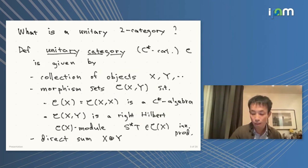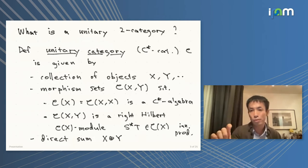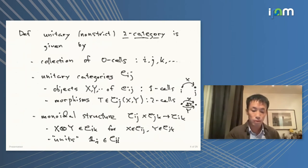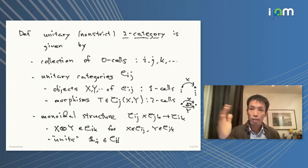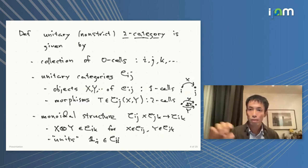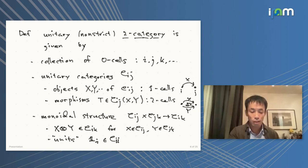For example, if you have projections in the C*-algebra endomorphism rings, those projections define direct summands of objects. So this is something like the relationship of vector spaces to algebras — if the two-categories are like algebras.